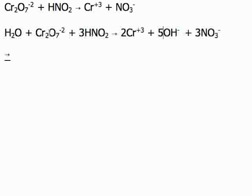1 oxygen, 7 oxygen, that's 8 oxygen, plus 3 times 2 is 6 oxygen, 14 oxygens. 3 times 3 is 9 oxygens plus 5 oxygens is 14. Good. 2 chromiums, 2 chromiums, 3 nitrogens, 3 nitrogens. We are done.